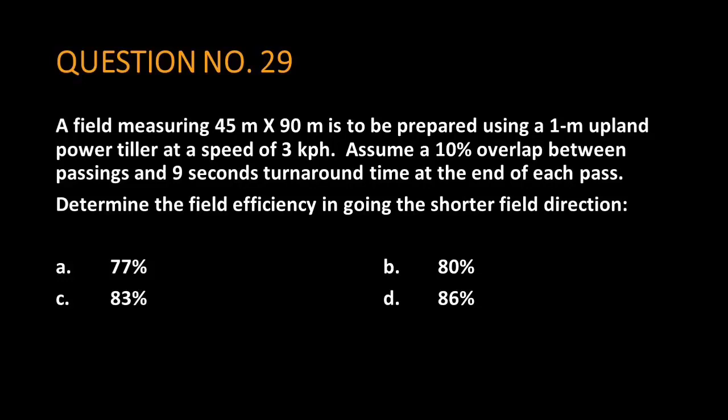Question number 29. A field measuring 45 meters by 90 meters is to be prepared using a 1 meter upland power tiller at a speed of 3 kilometers per hour.